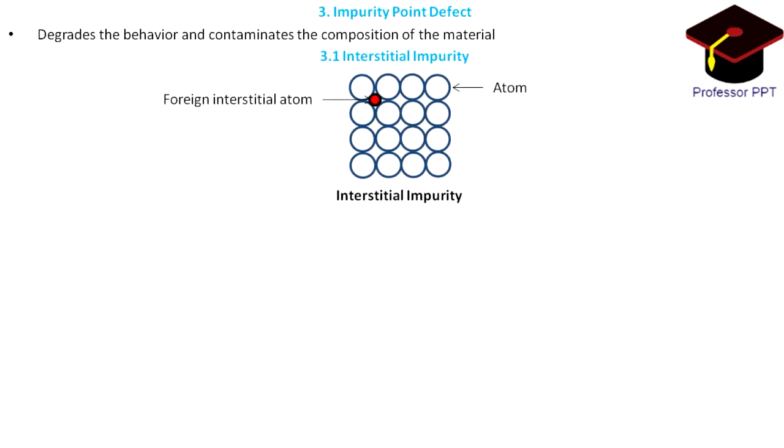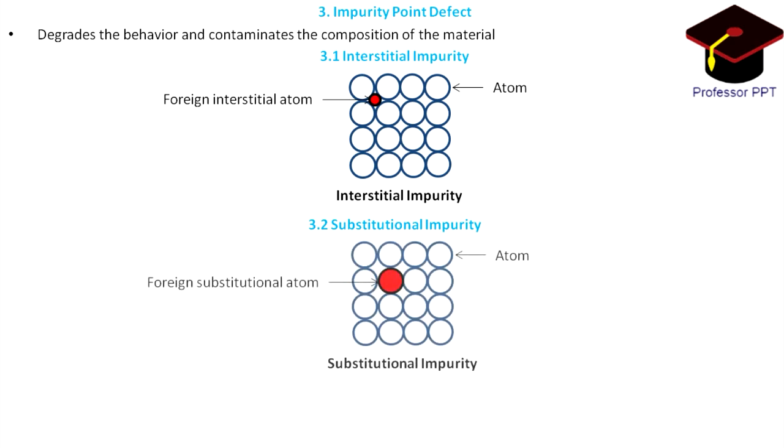Types of impurity point defects: The interstitial defect produced by a foreign atom at the interstitial site is called interstitial impurity. This causes a substantial modification of properties. Substitutional impurity - when a foreign atom substitutes or replaces the parent atom in a regular crystal, it is called substitutional impurity.